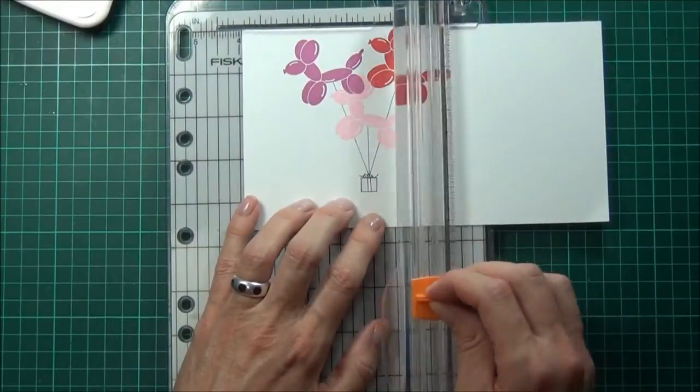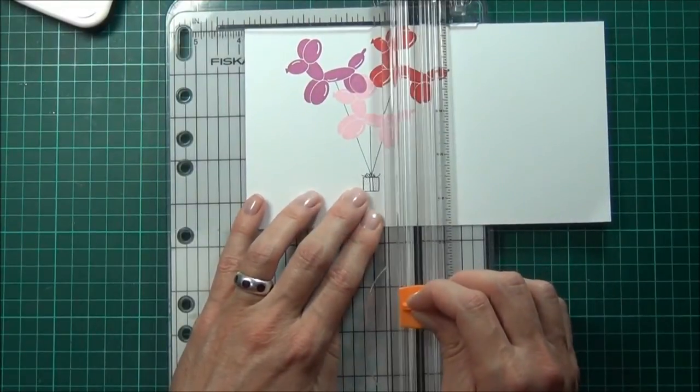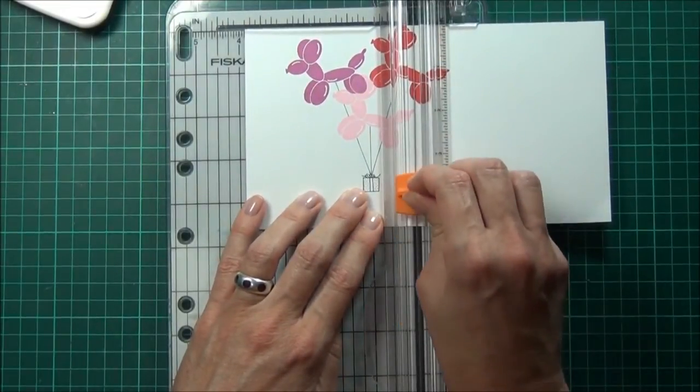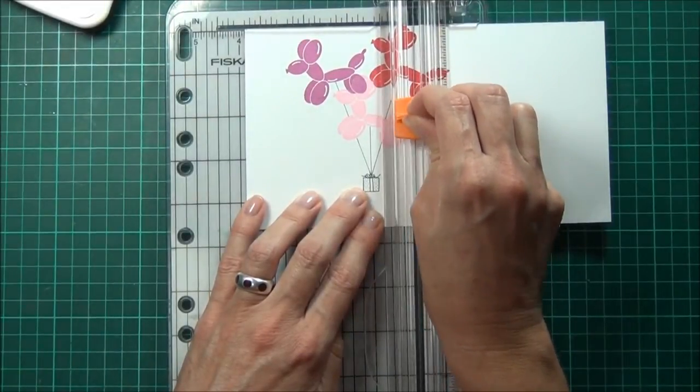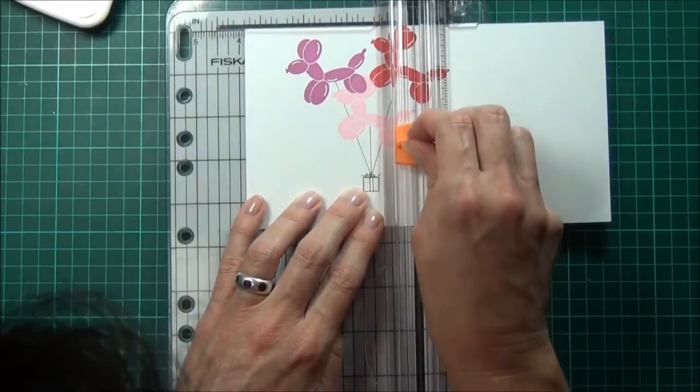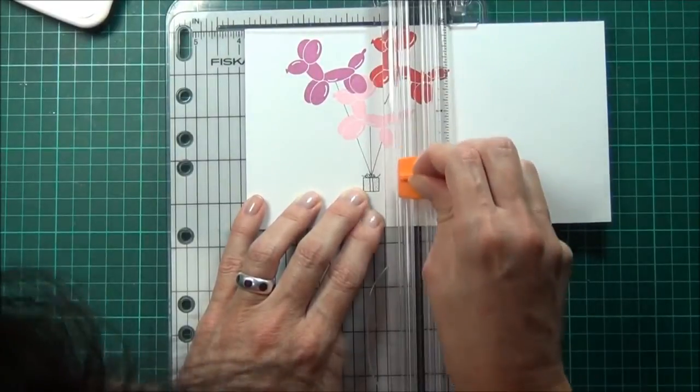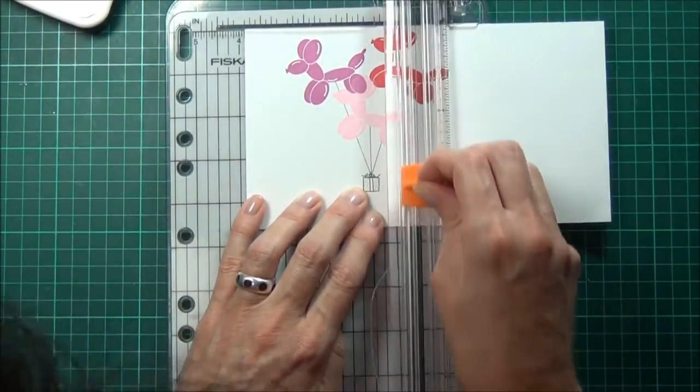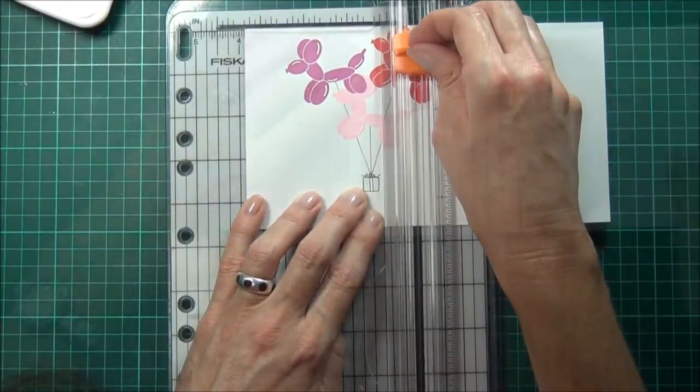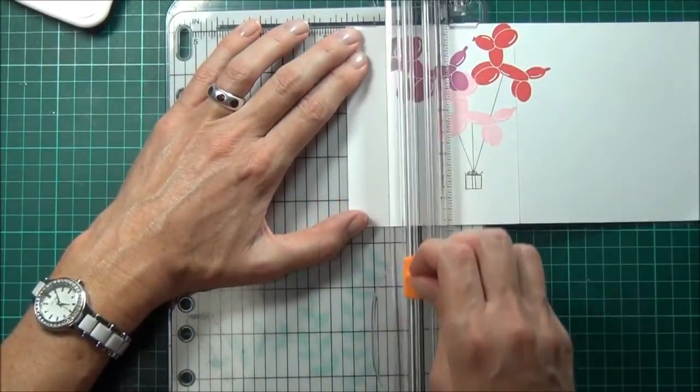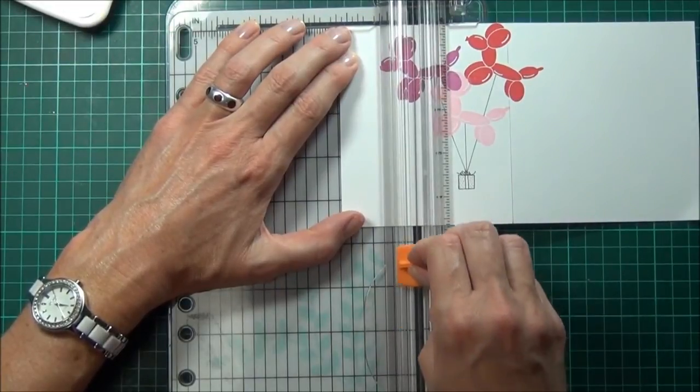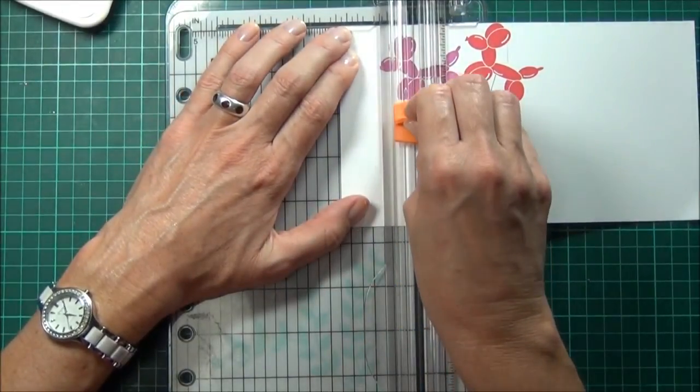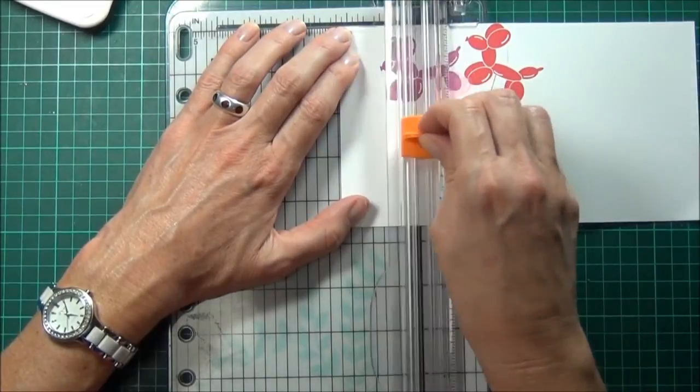I've just popped a couple of little marks on my cardstock here and I'm going to cut up to the image and do the same on the other side just so that I can leave a little border and cut around these balloon dogs.